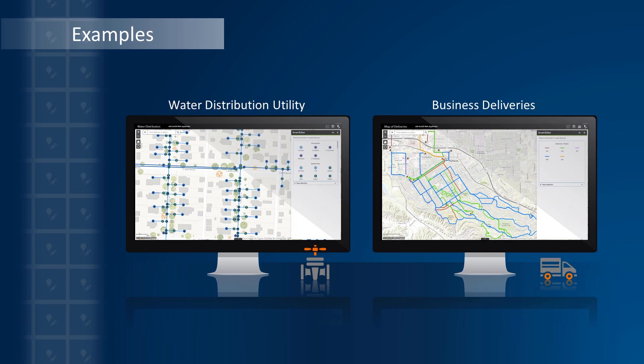We're looking at two examples today. In the first example on the left, I will copy data from a layer in my map. In the example on the right, I will combine information by bringing together data from separate sources into a single target layer.